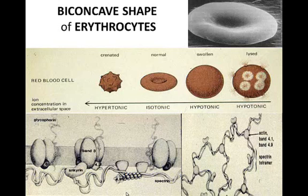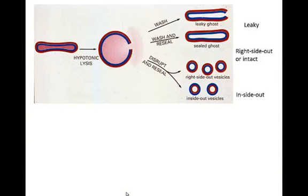So you can lyse it to get rid of all the hemoglobin inside and then you're left with the membrane ghost. It's a leaky ghost in the beginning if it hasn't sealed back. Or if it seals back, it becomes a right-side-out or intact vesicle. If you disturb them before they're resealed, sometimes they'll get confused and turn inside out.